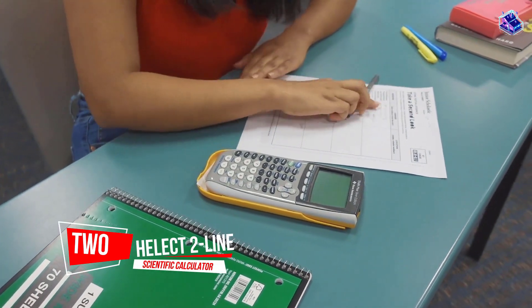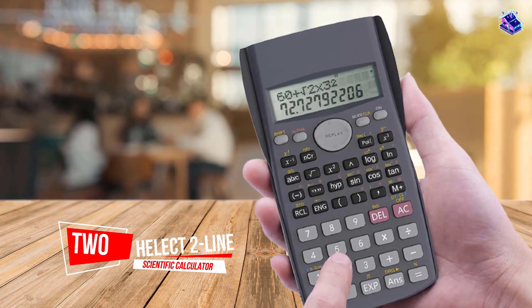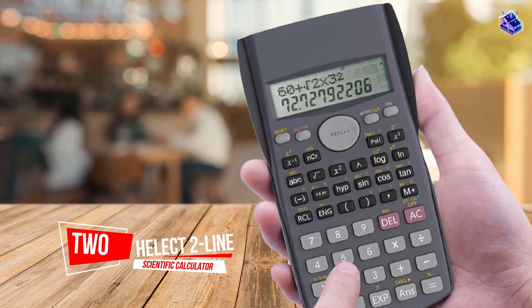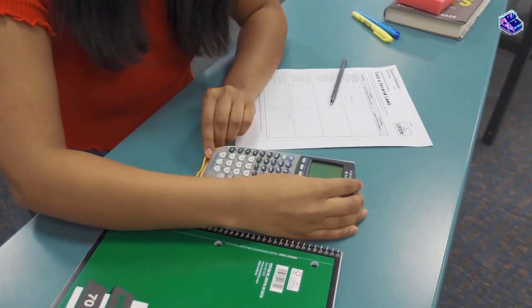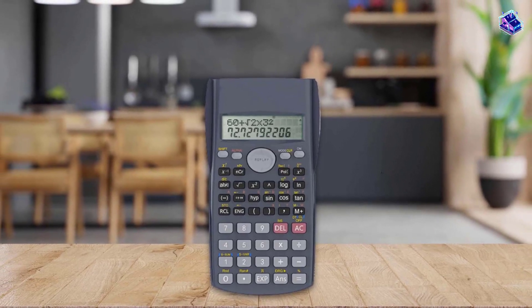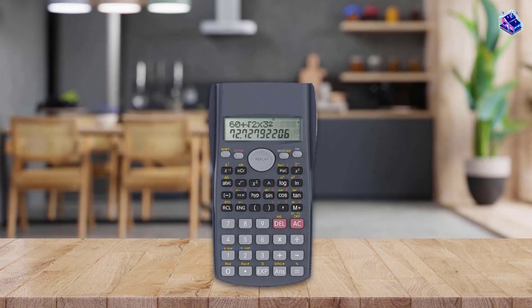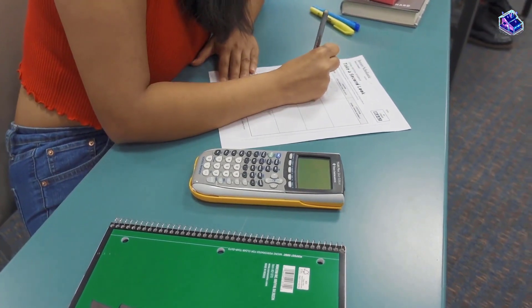Number two: Elect to Line Engineering Scientific Calculator. Professional grade scientific calculator with 240 scientific functions, easily handles one and two variable statistical calculations, three angle modes, and 12-digit widescreen HD display.